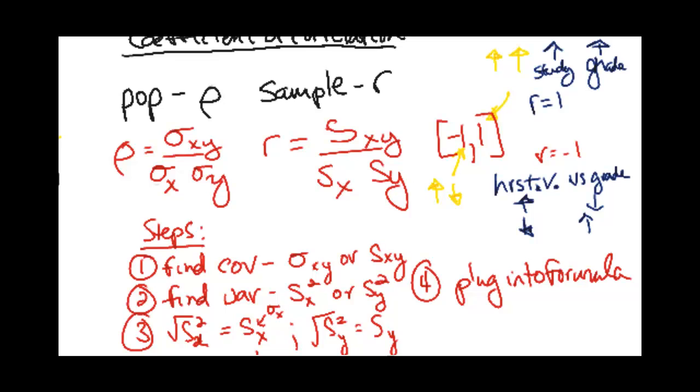So that'll basically be it. Again, make sure you know you have two formulas, whether we're talking about the population or the sample. Here are your steps: find your covariance, find the variance, turn them into standard deviations, plug into the formula. I hope this has clarified what coefficient of correlation is. Make sure you check out the example video to further clarify any doubts you might have. Thank you and have a nice day.